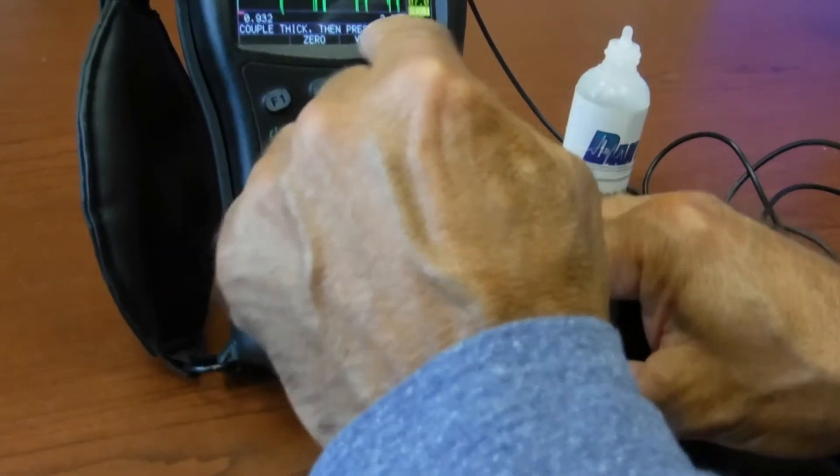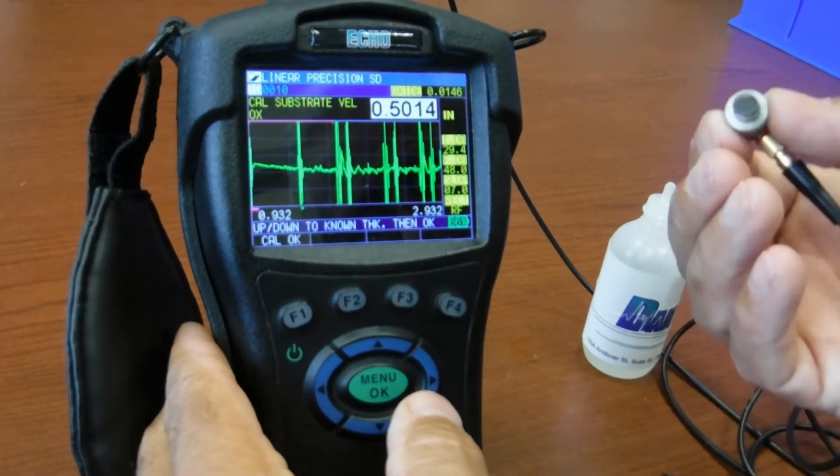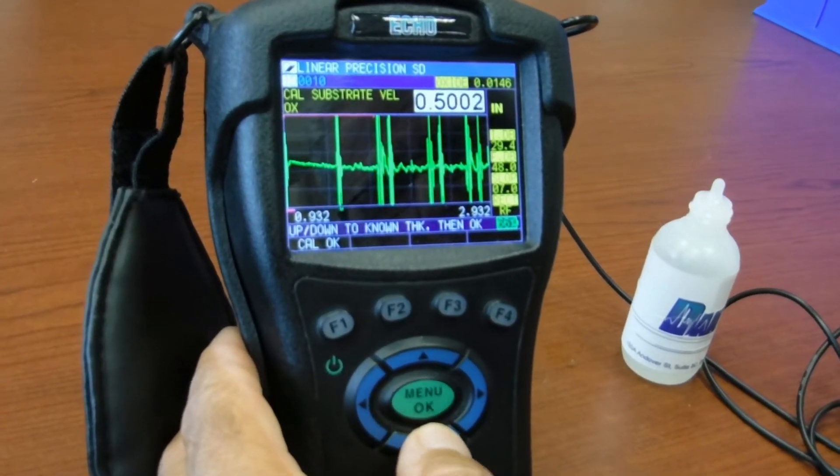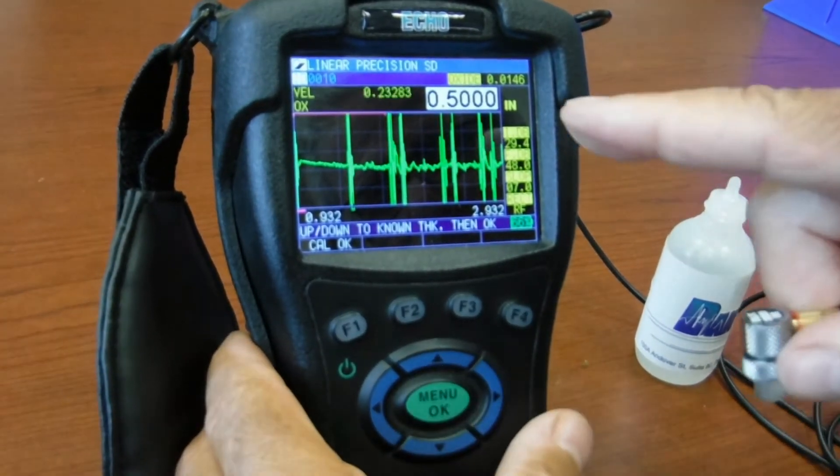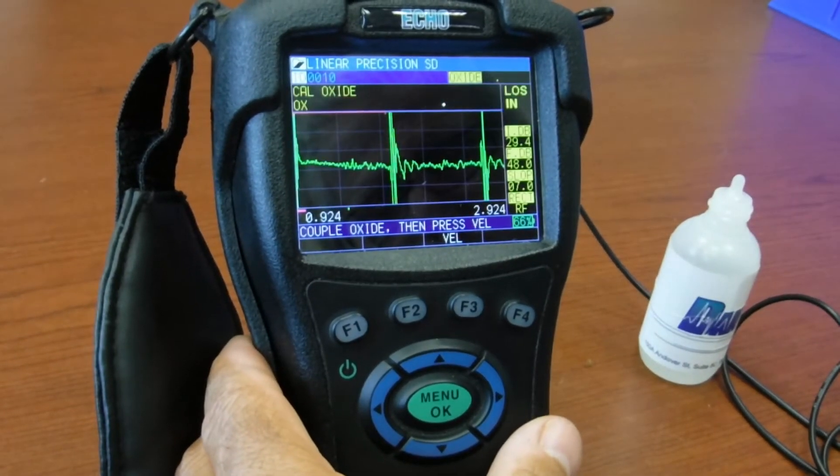It says couple to the thick which I'm on 500 thousandths. I press the F3 VEL key. You can remove the probe at that point. Scroll down to the known thickness of 500 thousandths and press menu OK. And it spits out the sound velocity for the carbon steel test block.